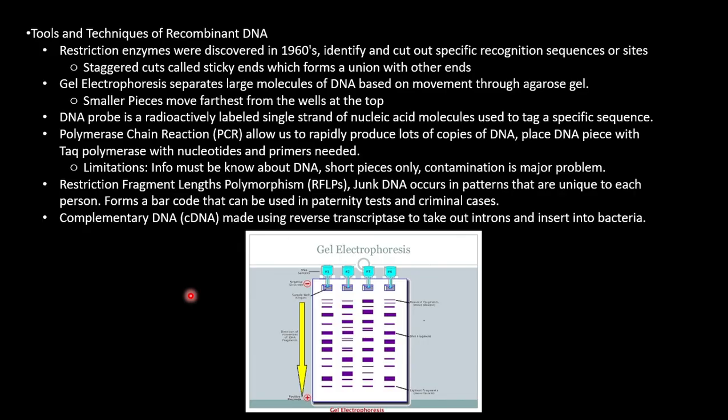Restriction fragment length polymorphism, or RFLPs, is junk DNA that occurs in patterns that are unique to each person. They form a barcode that can be used to figure out paternity tests and criminal cases. Finally, complementary DNA, cDNA, is made using reverse transcriptase to take out introns and insert into bacteria.